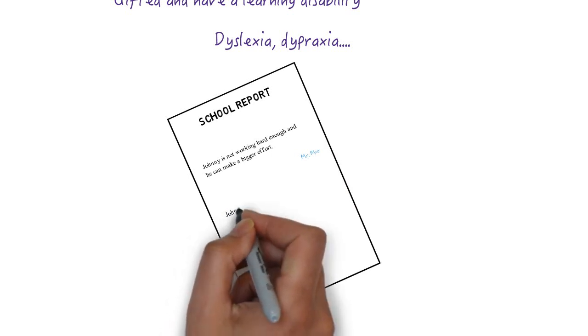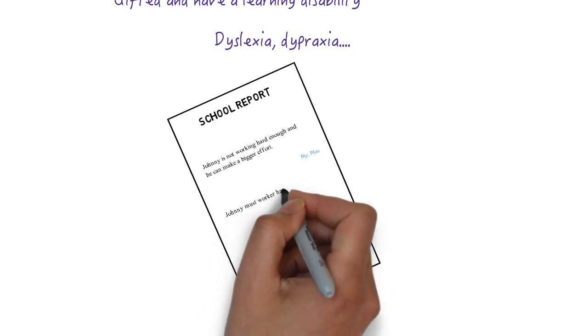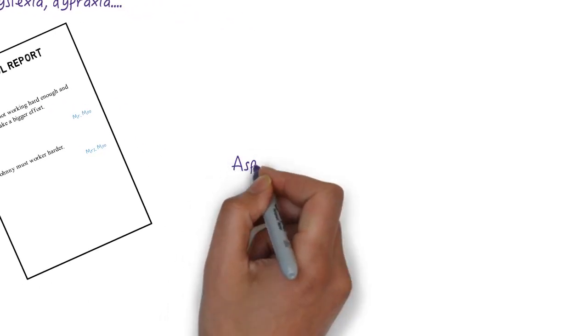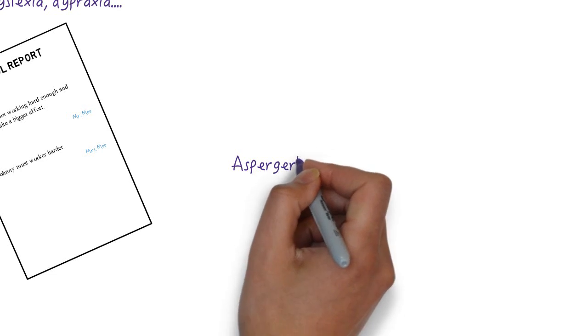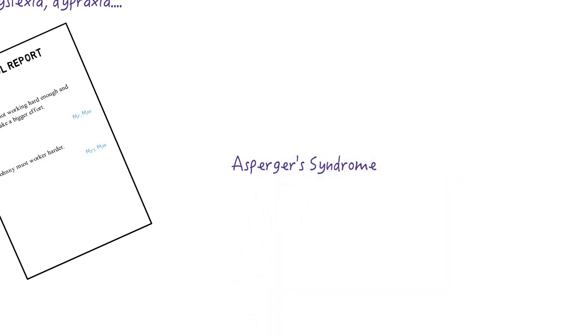Typical school report comments such as must work harder suggest that the teacher believes the child has more ability than their work displays. So the question has to be, why did the student not produce work which is commensurate with their perceived ability? Of particular concern are gifted students who are also on the autistic spectrum. These students present a particular challenge and require specific intervention to help them make the most of their strengths.